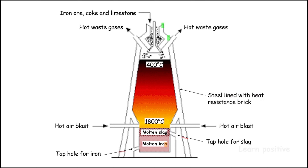Looking at the schematic diagram, the green color at the top represents the hopper, from which we charge the coke, iron ore, and limestone into the top of the furnace. The blue color shows the pipelines at the bottom through which we blast hot air at about 1000 degrees Celsius.